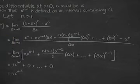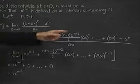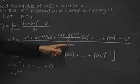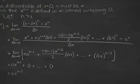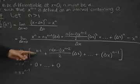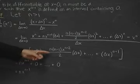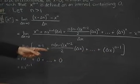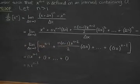The x^n's cancel. Furthermore, every remaining term has a delta x in it, so we can cancel the delta x's with the one in the denominator. And what are we left with? We have the limit as delta x goes to 0 of nx^(n-1), and then a lot of terms all containing a delta x. So when delta x goes to 0, they disappear.